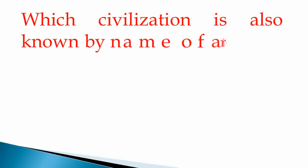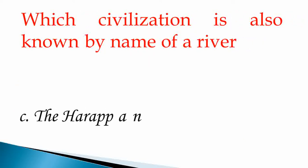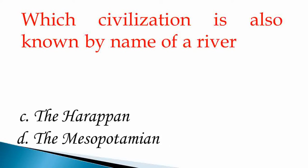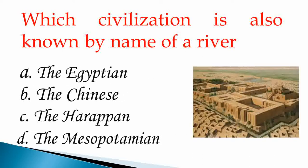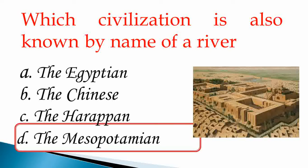Question number 3. Which civilization is also known by name of a river? Option A: The Egyptian. Option B: The Chinese. Option C: The Harappan. Option D: The Mesopotamian. Our answer is Option D, The Mesopotamian.